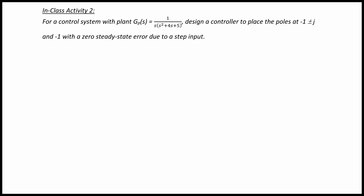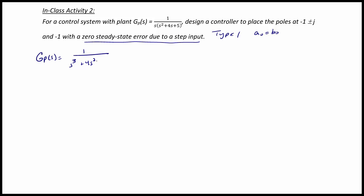The first thing to notice is that we originally had a type 1 system because there is an integrator, or a pole at the origin. When we're done, they still want zero steady state error due to a step input, so at the end we should still have a type 1 system. The first thing we do is write GP(s) equal to 1 over s cubed plus 4s squared plus 5s, which equals NP(s) over DP(s).